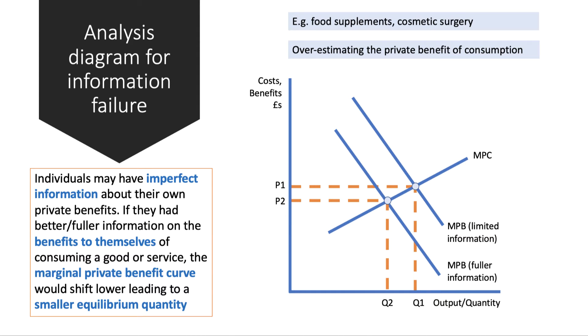Individuals oftentimes have imperfect information. If they had better information, the marginal private benefit curve would shift, leading to a smaller equilibrium quantity and perhaps a reduced market failure.